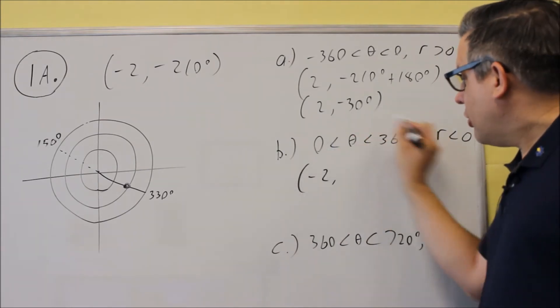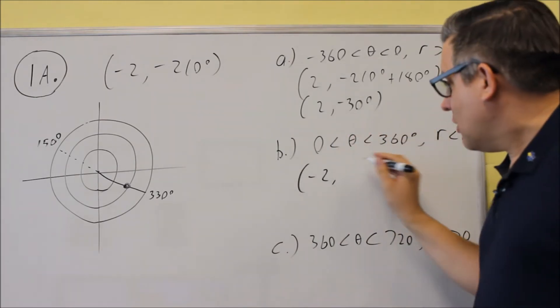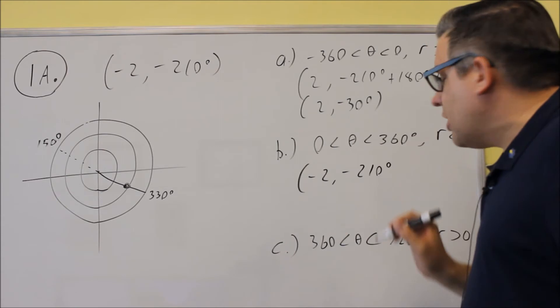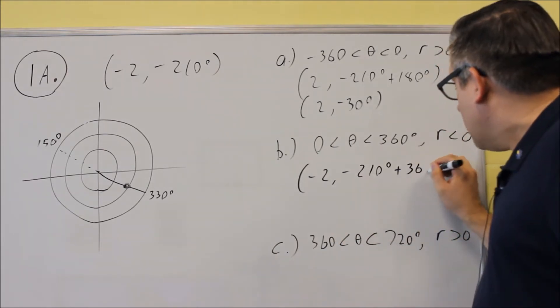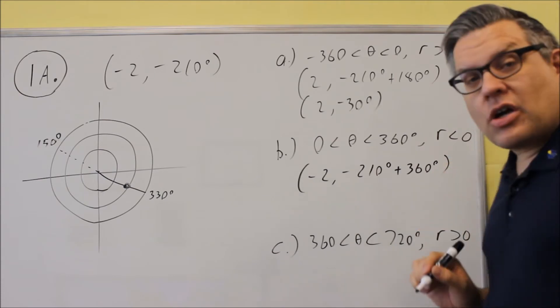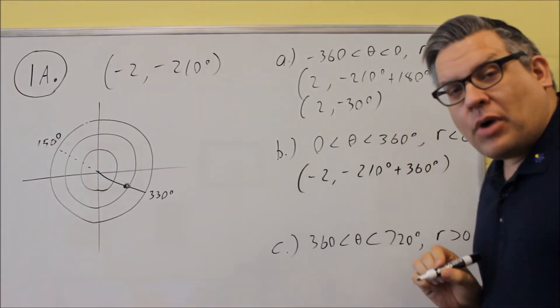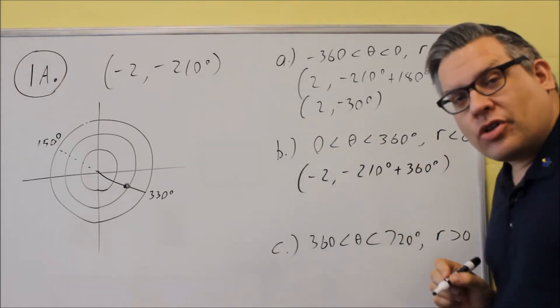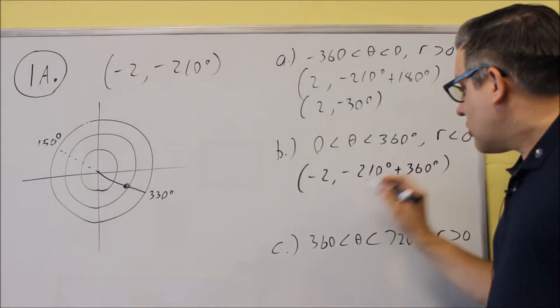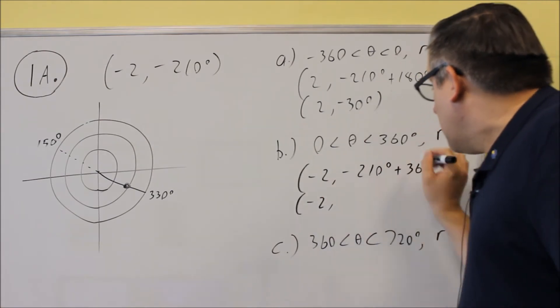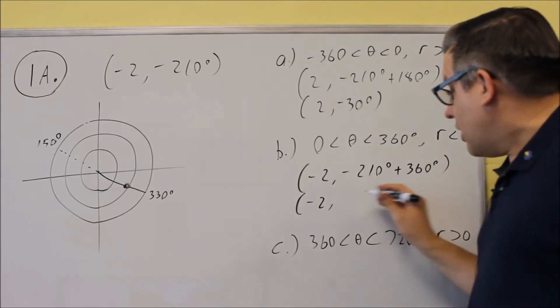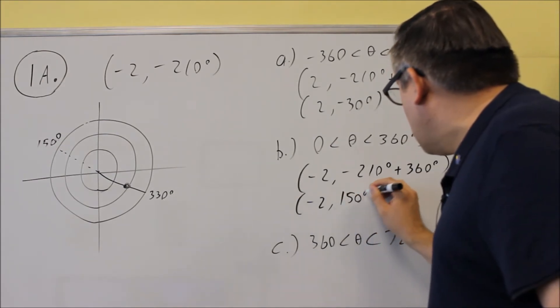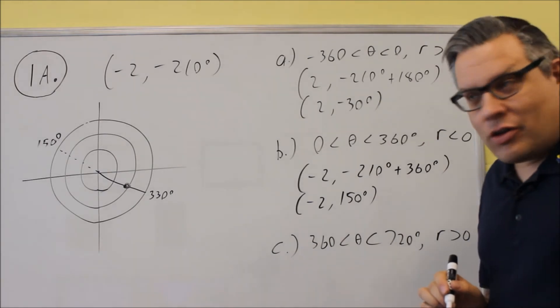Your choice depends on what your ending angle has to be. So we're starting with negative 210 degrees. I can either add or subtract 360, but I definitely want to add 360 because I want that to turn into a positive angle, an angle between 0 and 360. So we're going to add that together, negative 210 plus 360, and that's going to give us 150 degrees.